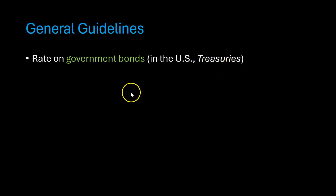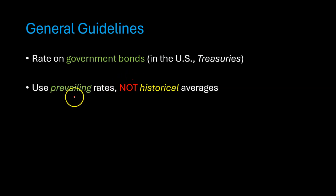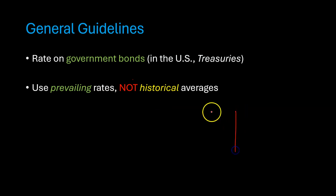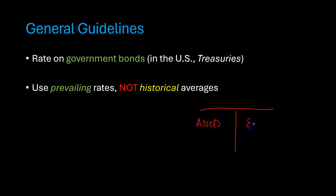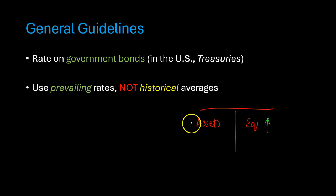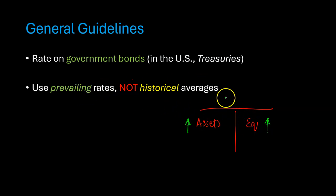The other thing to keep in mind is that we want to use the prevailing rates, not the historical averages. This is a very, very important point. To understand this fully, consider the following situation: imagine that you are a financial manager who has a bunch of assets and you have historically funded them with equity. Now you're planning to raise some additional equity to invest in additional assets, and you need to figure out the cost of equity — so you want to use the risk-free rate as one of the inputs into the capital asset pricing model.